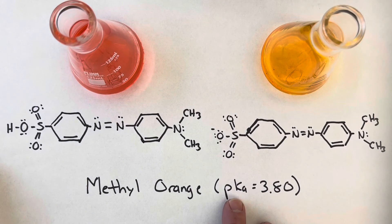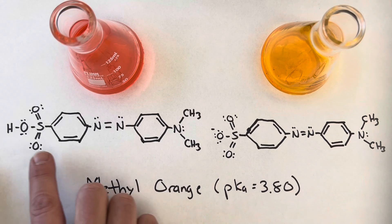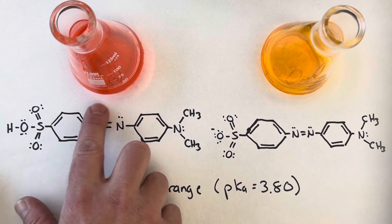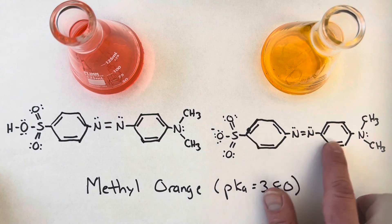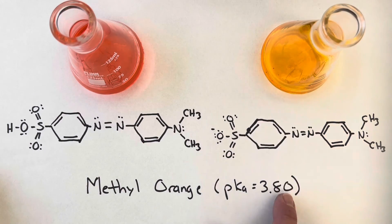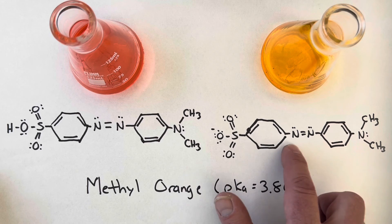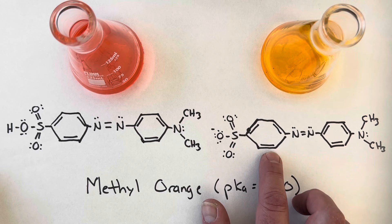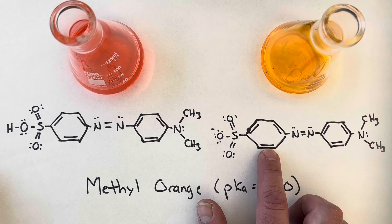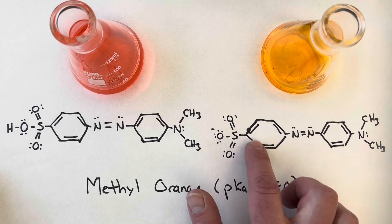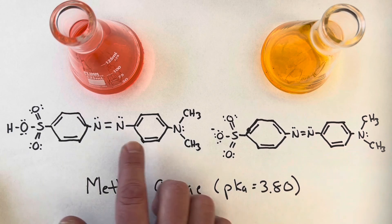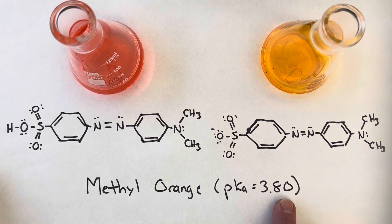Let's take a look at methyl orange, which has a pKa of around 3.8. Under a pH of around 3 or so, there are extra protons, so we have this proton attached and it's in the red form. Most of the molecule stays consistent. Whereas above a pH of around 4.8, the proton comes off and the whole molecule shifts. The bonds shift a little bit in their density and confinement, so we end up with a slightly different color being absorbed and reflected by these electrons, and that happens right around a pH of 3.8.